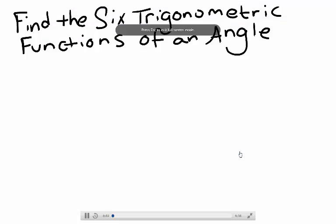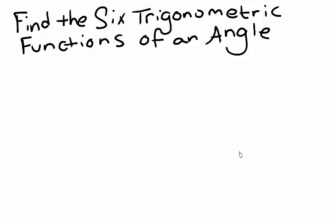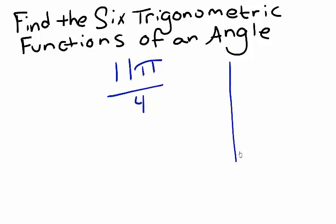In this video, we're going to learn how to find the exact values of the six trigonometric functions of a given angle. If any of the functions are not defined, we'll simply state 'not defined.' Suppose we want to find the value of the six trigonometric functions of 11 pi over 4. The angle 11 pi over 4 is a multiple of pi over 4.